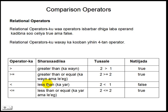Operator ka saddexaad magiciisu waa less than. Qaarkoodna waxay ugu yeeraan smaller than, oo afsomaali ko ah kayar. Tusaala operator kanna oo ah two is less than one, waxaa lo akhriyaa sidhan: lambar ka labo makayyari ya hay lambar ka kow. Jawabtu wa maya sababtu ah lambar ka labo kamayyara lambar ka kow, sidaas darteed natiijadu wa false.